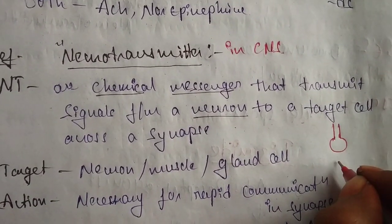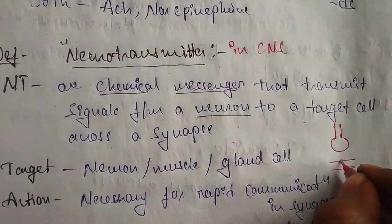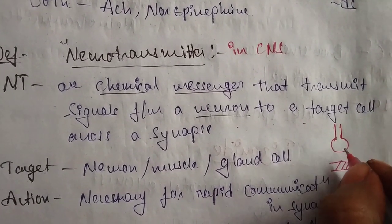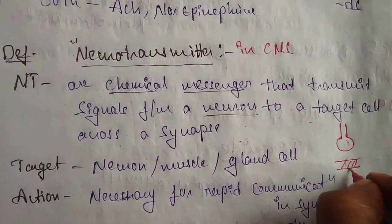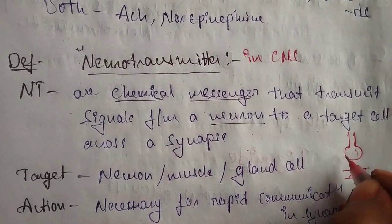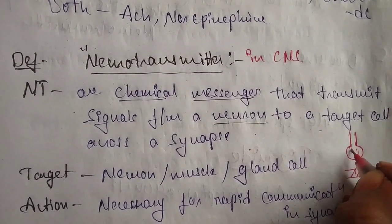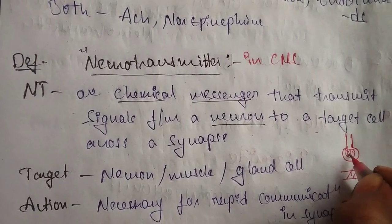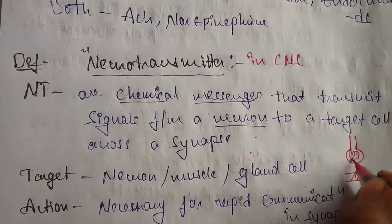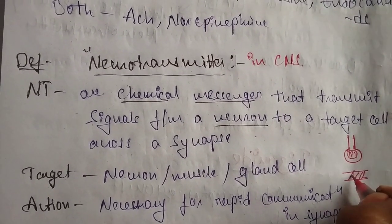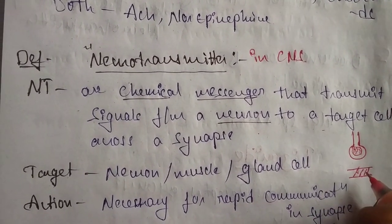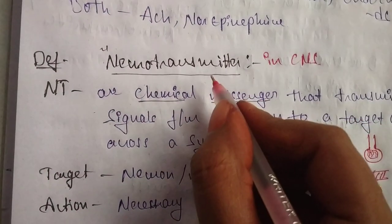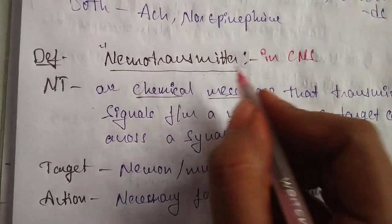It transmits the signal to another target tissue through the synaptic cleft. Neurotransmitters are stored in the synaptic vesicles. This neurochemical transmits the signals from one neuron to another neuron, or from one neuron to another effector organ or target organ. This is the definition of neurotransmitter.